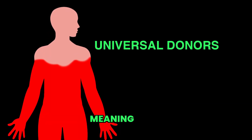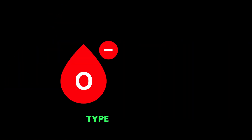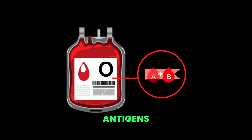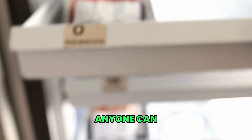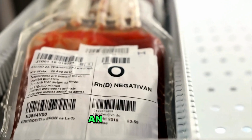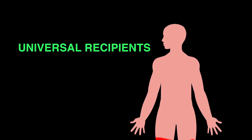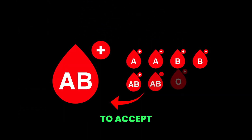But here is the good news. Some people are universal donors, meaning their blood can be donated to anyone. Type O negative is the superhero of blood types, lacking both A and B antigens and the RHD protein. Anyone can receive this type of blood in an emergency. On the other hand, some are universal recipients. Type AB positive has both A and B flags, allowing them to accept any blood type.